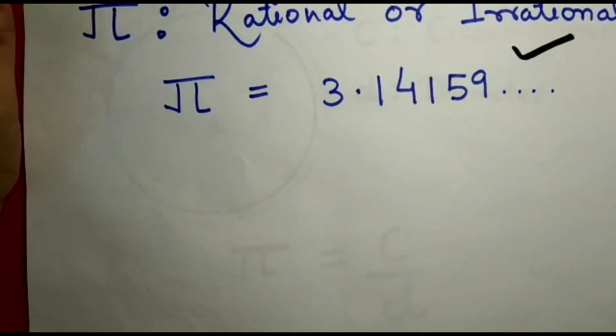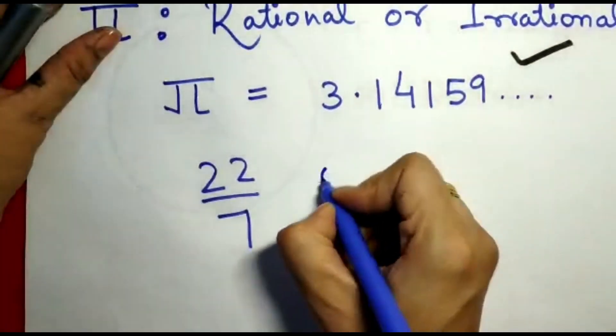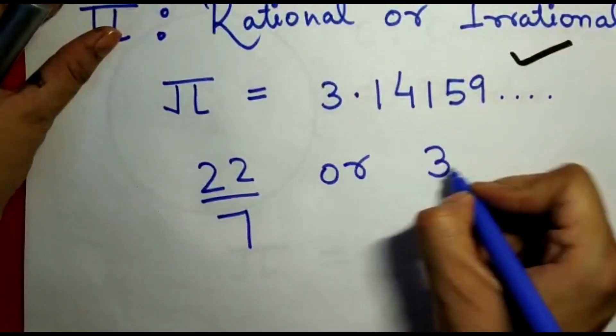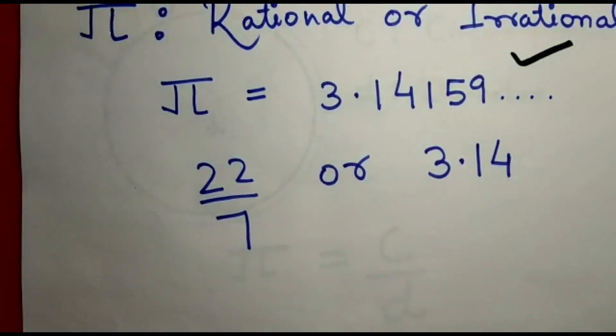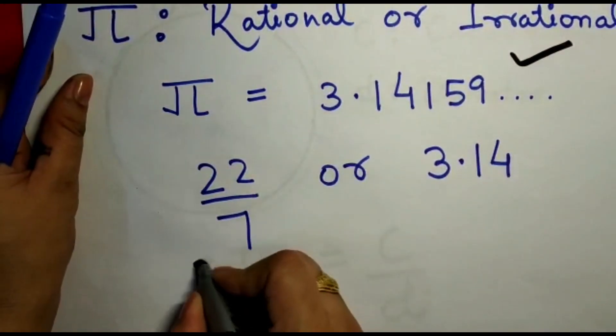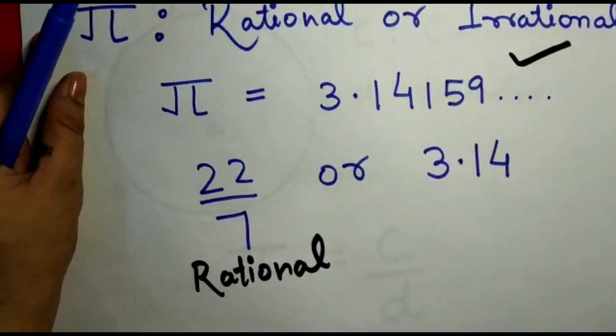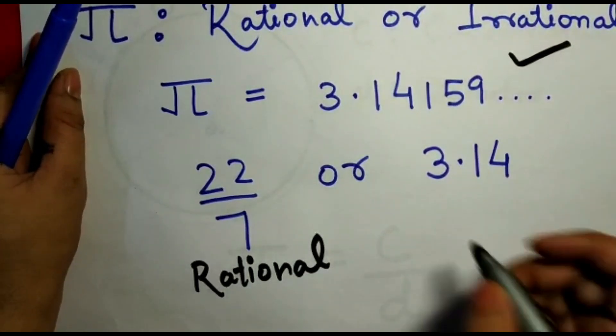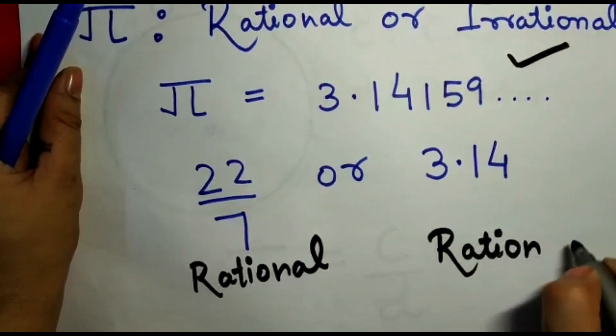The main thing is, in the textbooks in school, many teachers and books recommend students that in place of Pi in many numericals, you have to use 22/7 or 3.14. But what is the confusion here? 22/7 is a rational number because it's written in the form of P/Q. 3.14 is also a rational number because it's a terminating decimal expansion.